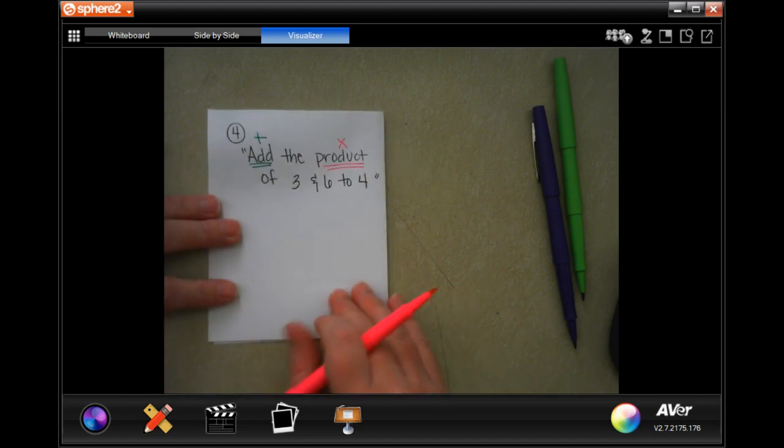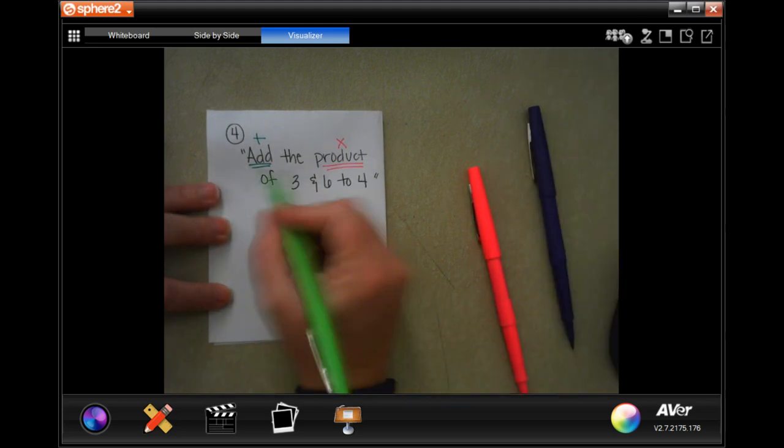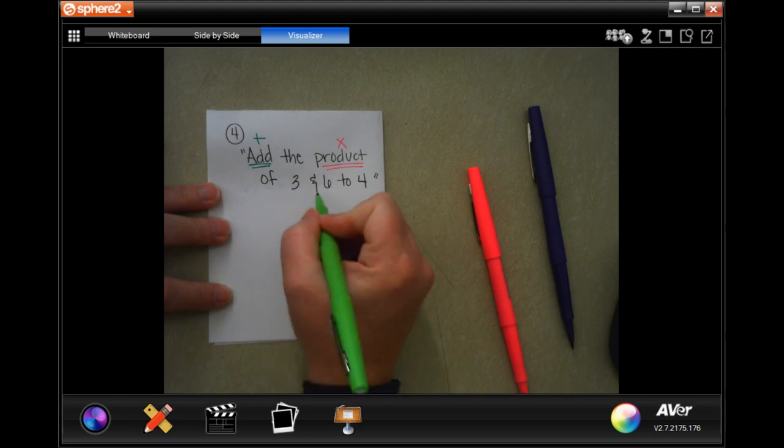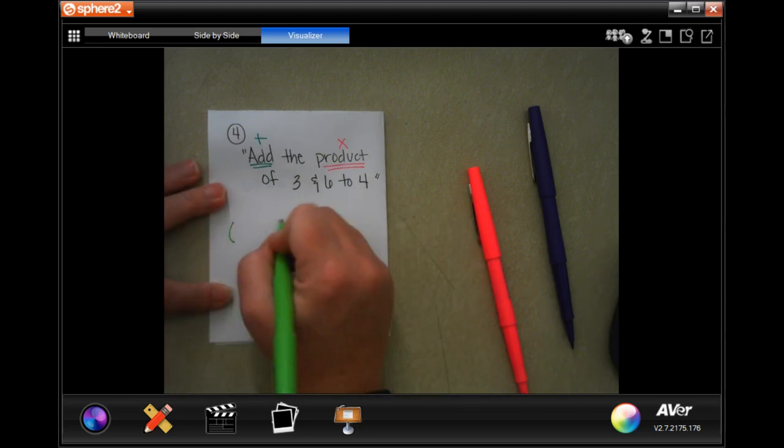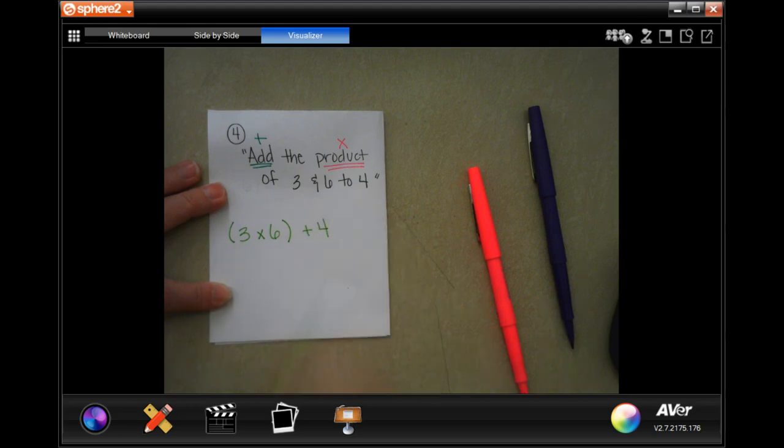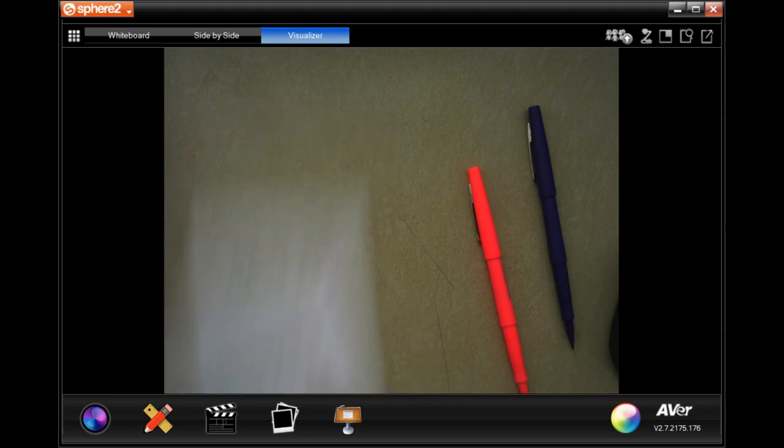Now, number 4 says, what is the following sentence written as an expression? It doesn't ask us to solve that, it just wants to know how we would write it out. So add the product of 3 and 6 to 4. So product means multiply. 3 and 6, and we're adding that to 4. Done.